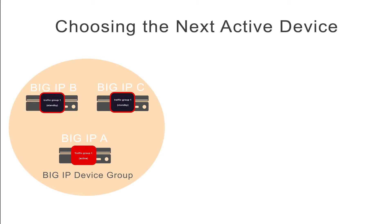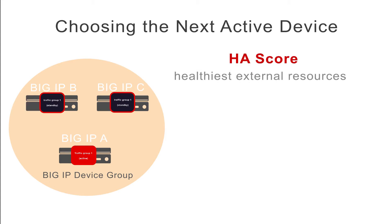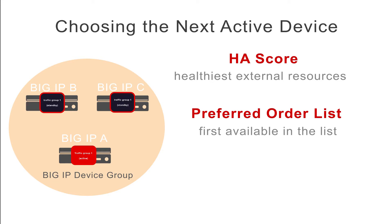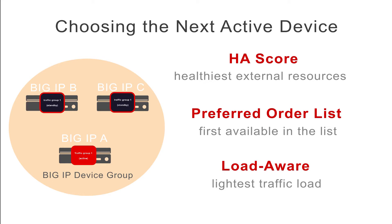The Big IP system can choose a next active device by comparing the device's HA scores, which indicate how healthy each device is in terms of external resource availability such as trunk links or pool members. It can pick the first available device in an ordered list of devices that you build, or it can pick the device that you've estimated to generally have the lightest overall traffic load compared to the other devices.